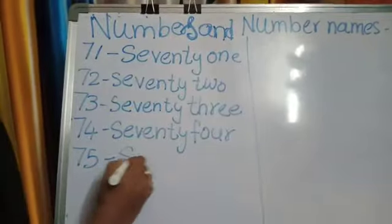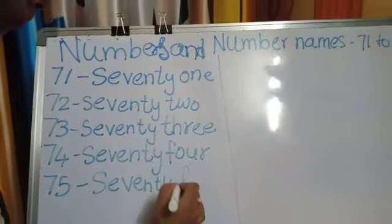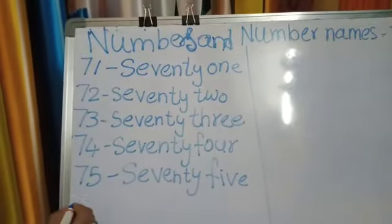Next 75. S-E-V-E-N-T-Y, 70. F-I-V-E, 5, 75. 75 after children? Yes.